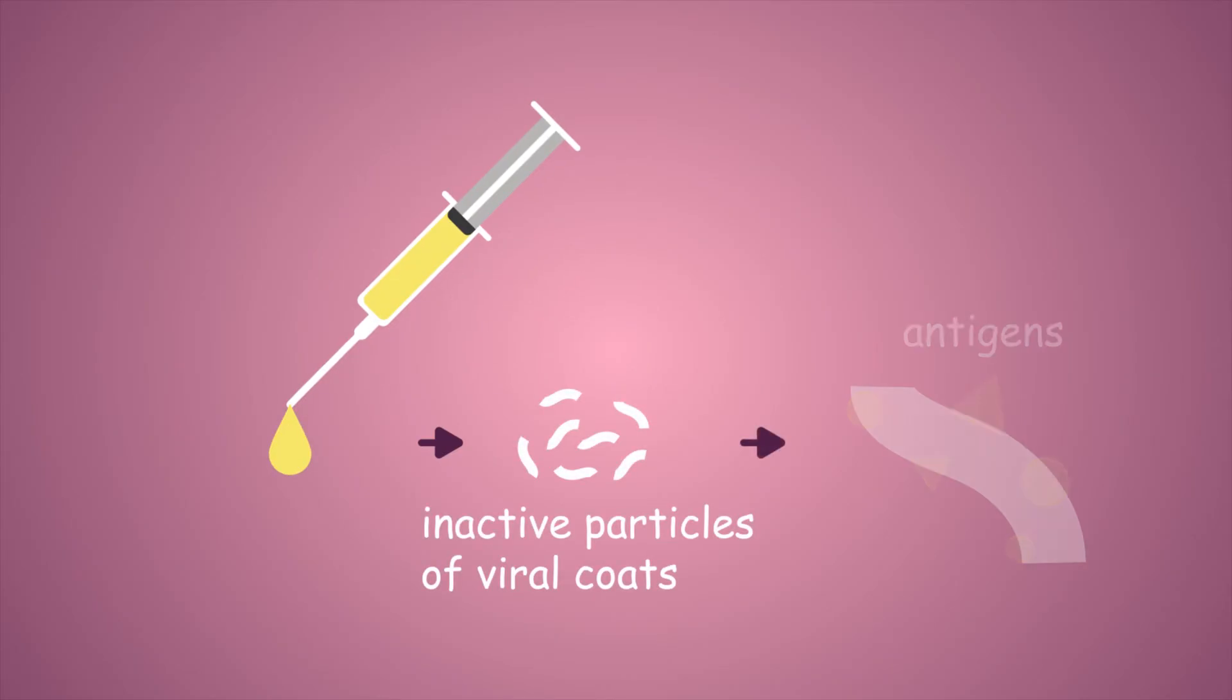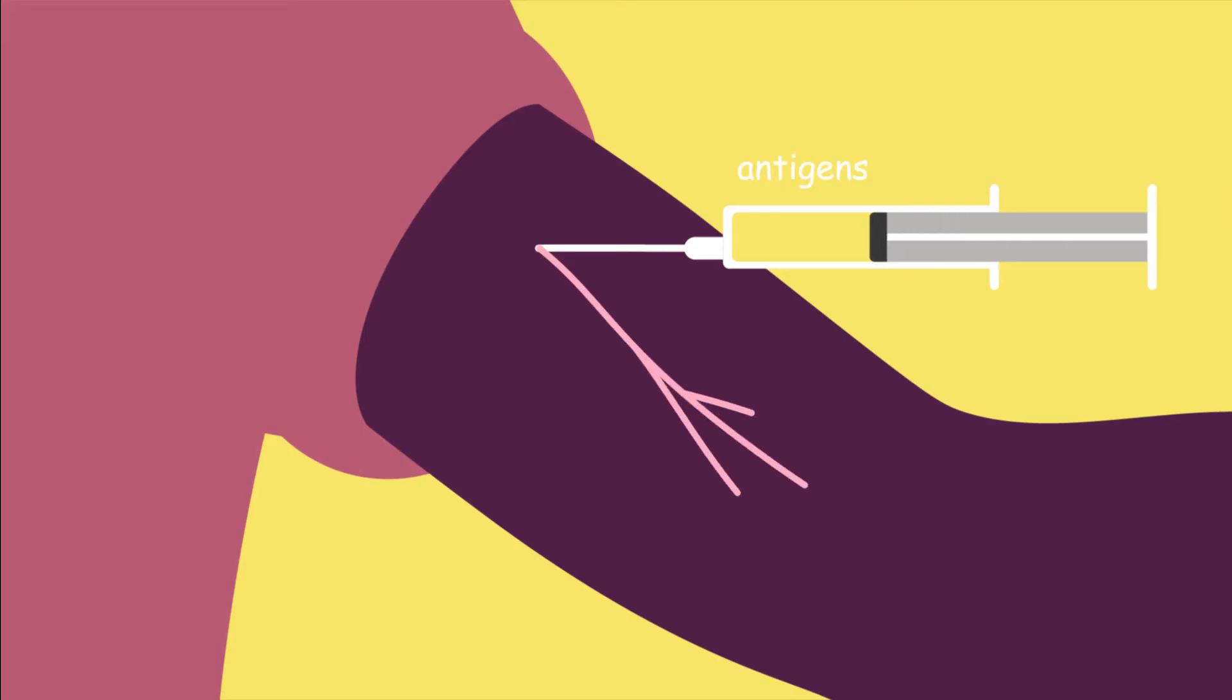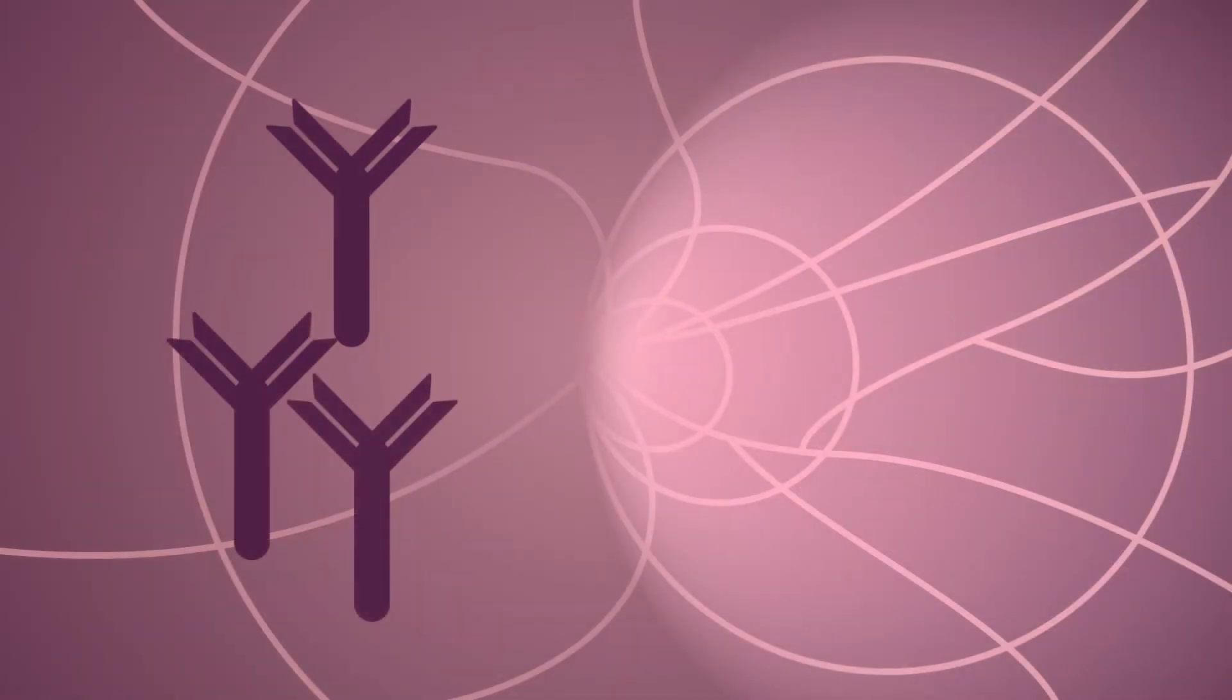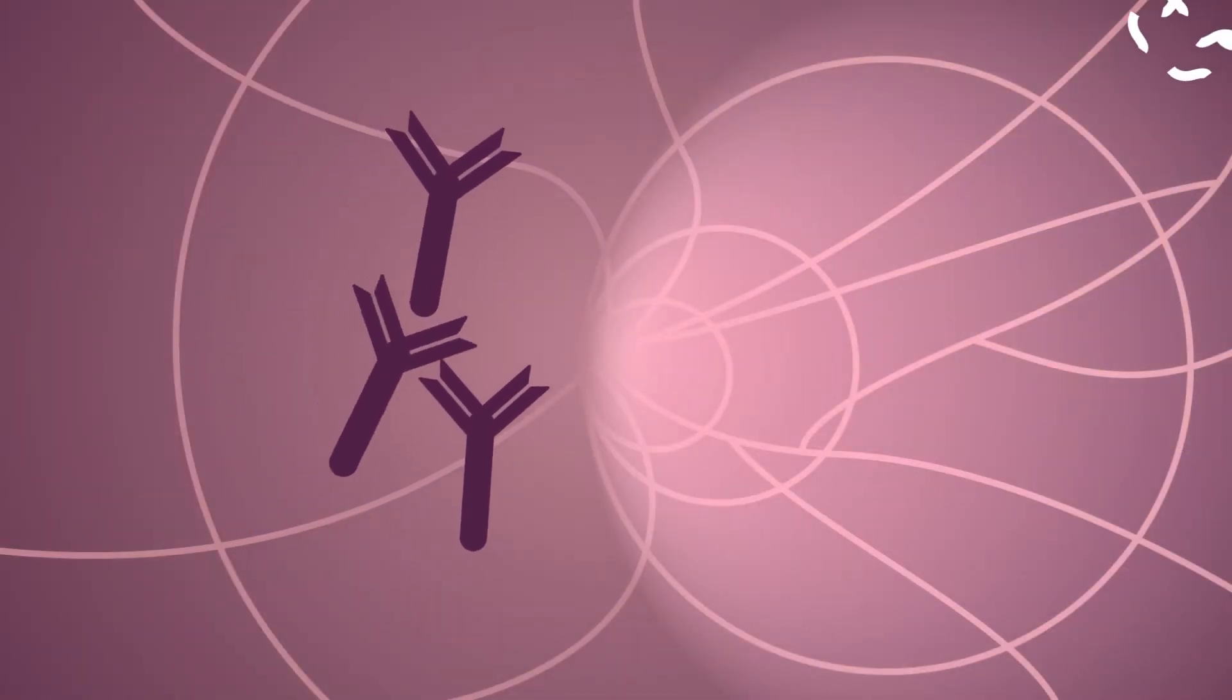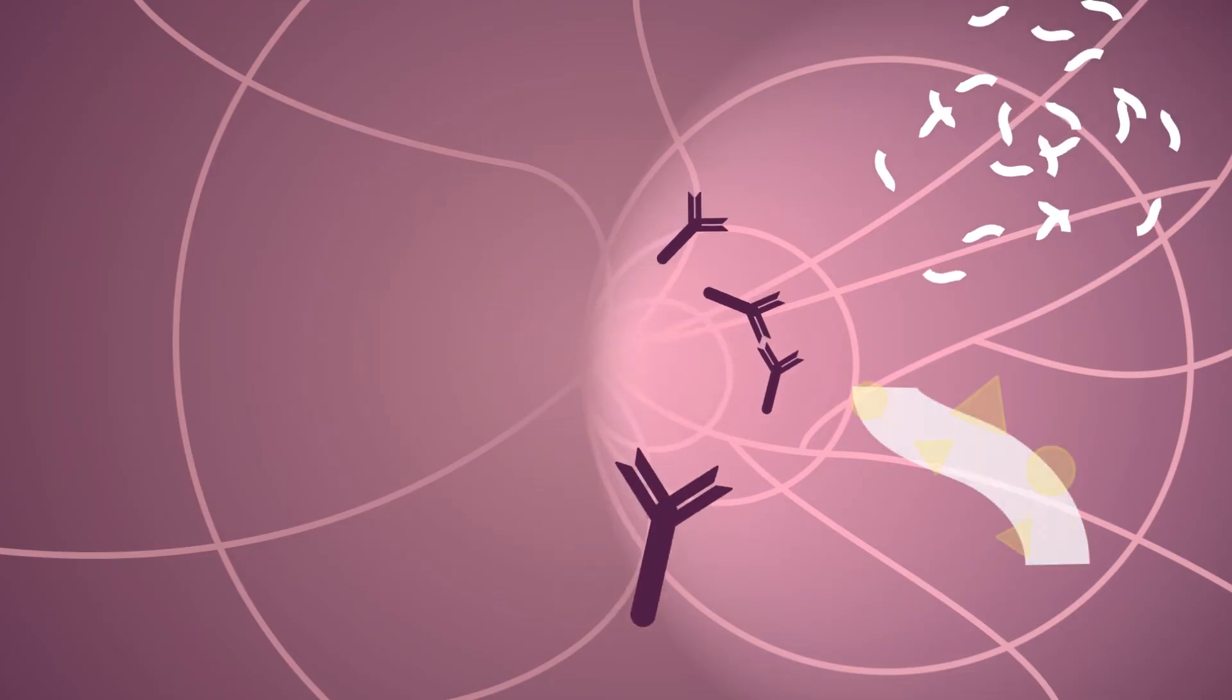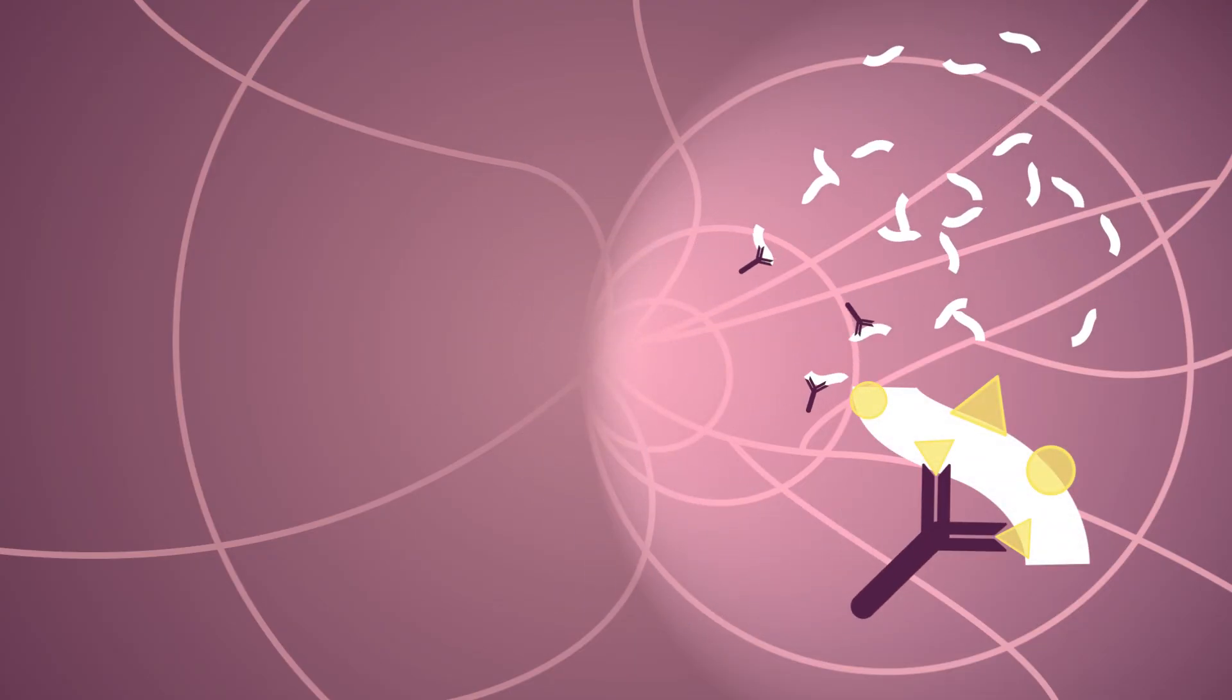So how do vaccines work? Vaccines contain inactive particles of viral coats, which contain proteins called antigens, specific to the virus itself. When the vaccine is injected into the body, the immune system immediately produces antibodies against the antigen proteins. If the person comes into contact with the actual virus, the body is already prepared to fight the infection with its antibodies.